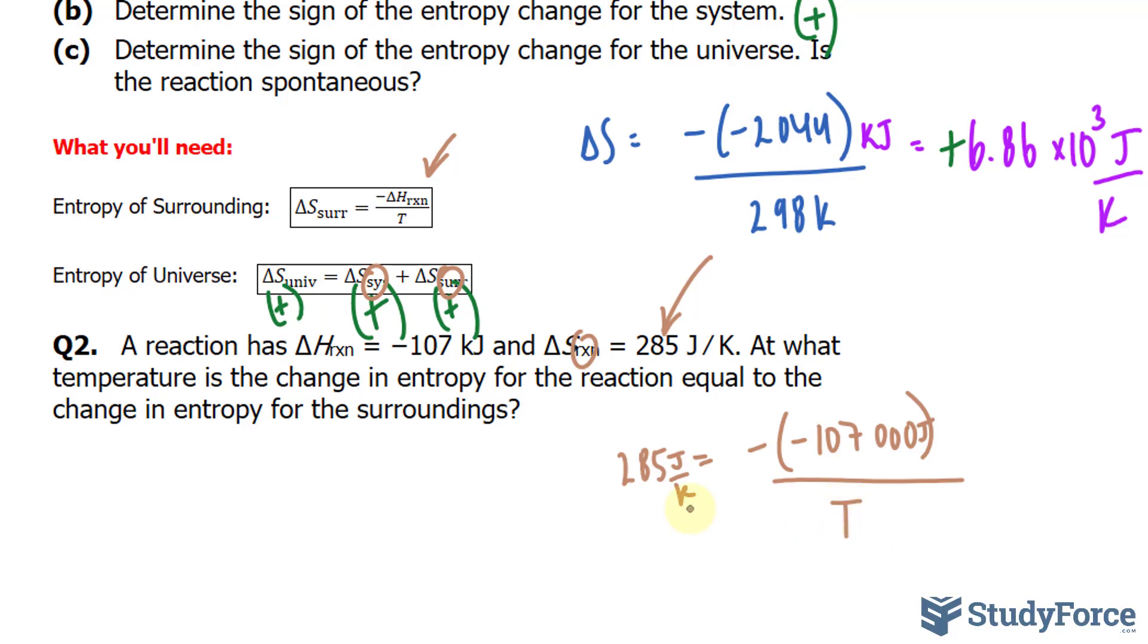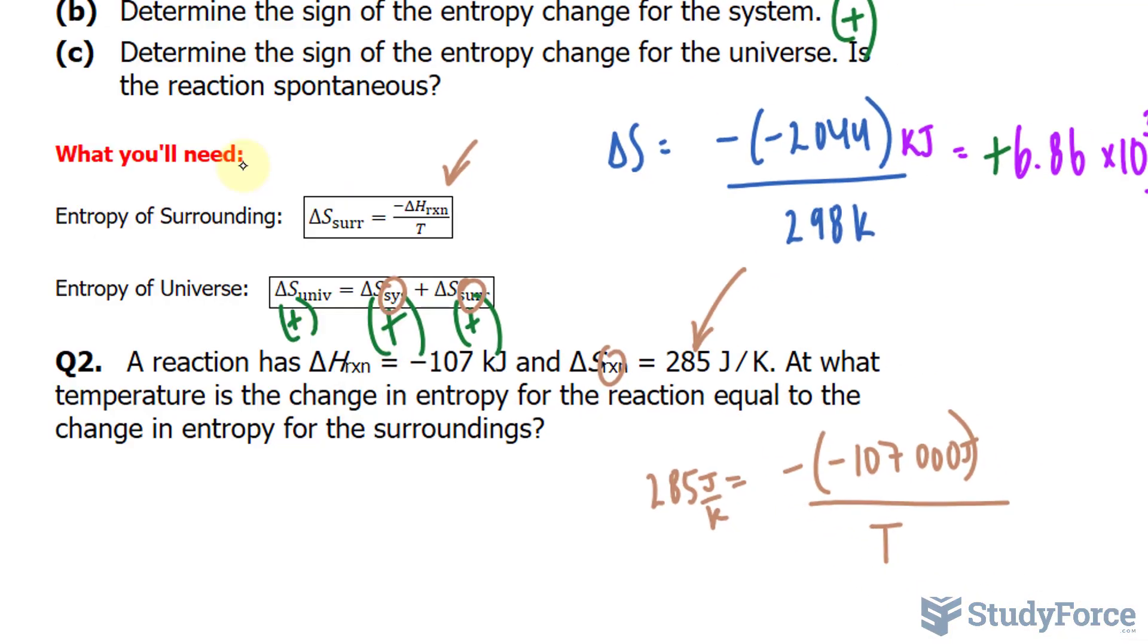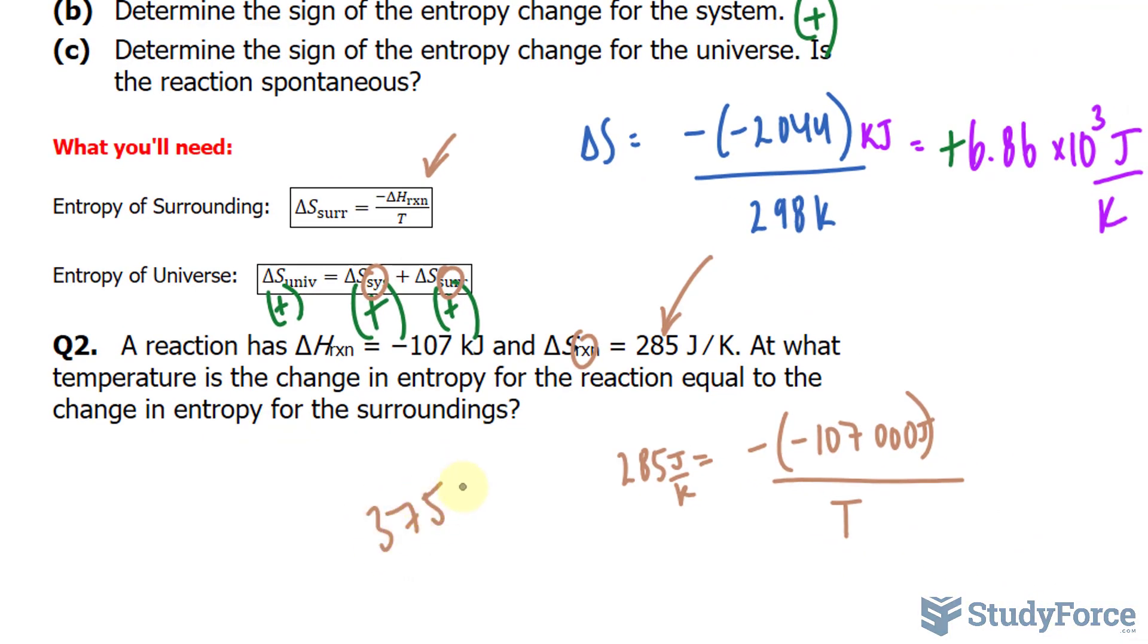We multiply both sides by T, and then divide both sides by 285. We end up with, as you can see in the calculator, the number at the top, divided by 285 gives us 375. 375 Kelvin is when the reaction entropy is equal to the surrounding entropy.